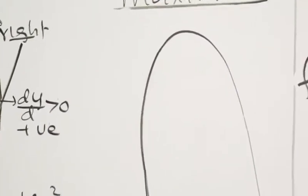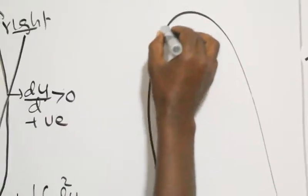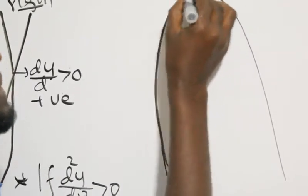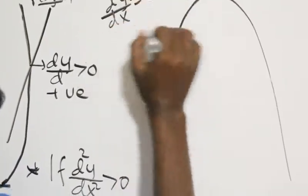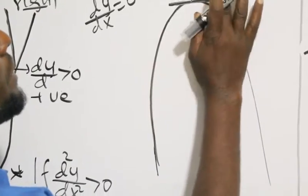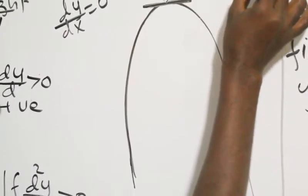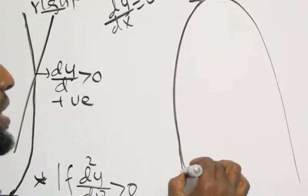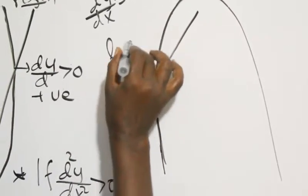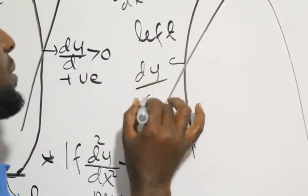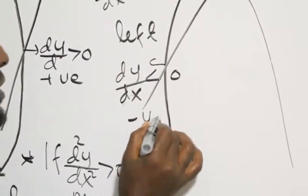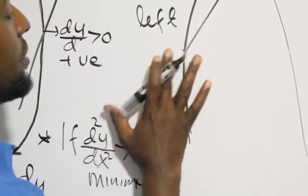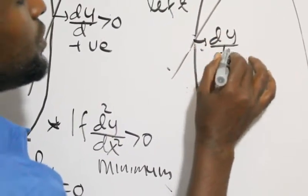The second derivative helps determine the maximum value or minimum. The derivative of y with respect to x is equal to zero at the stationary point. If you look to the left, the derivative is less than zero, meaning the function is decreasing to the left of the point.